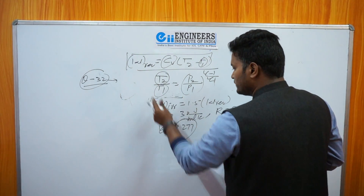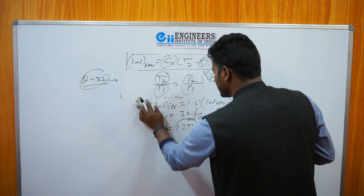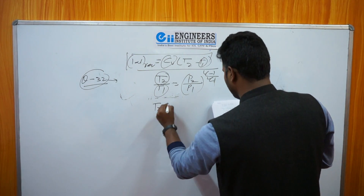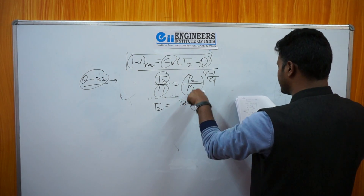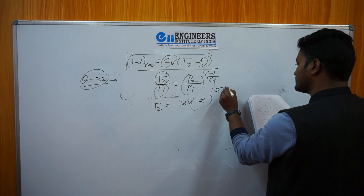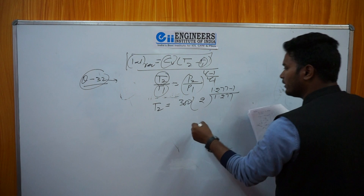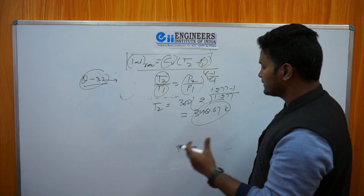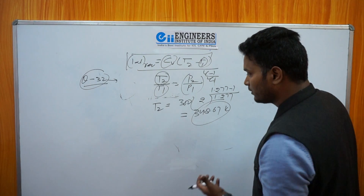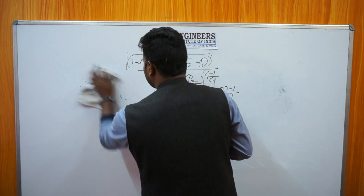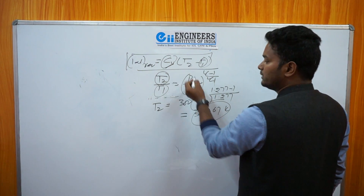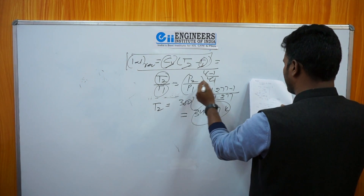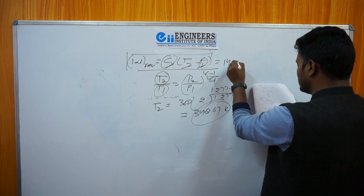Putting the values: T2 = 300 × (6/3)^((1.27−1)/1.27). You will get T2 = 348.67 Kelvin. This is the temperature when work is done on the system by the reversible adiabatic path. Now putting Cv and the temperatures into the work formula: W_rev = Cv × (T2 − T1) = 30 × (348.67 − 300) = 1460 J/mol.